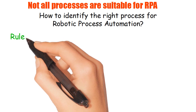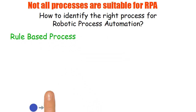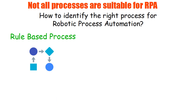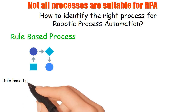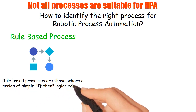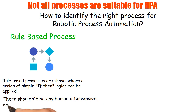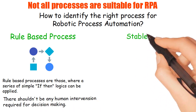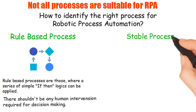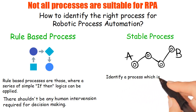Point number one: rule-based process. Select only the rule-based processes for RPA. Rule-based processes are those where a series of simple if-then logics can be applied. There shouldn't be any human intervention required for decision making.